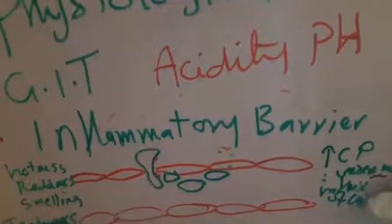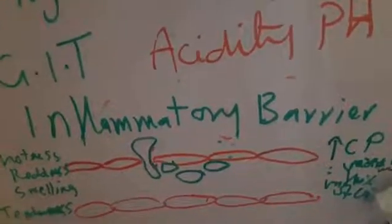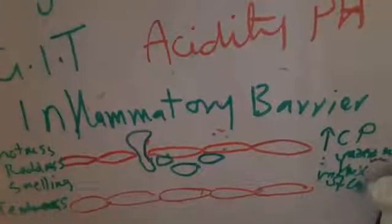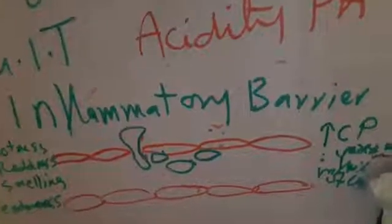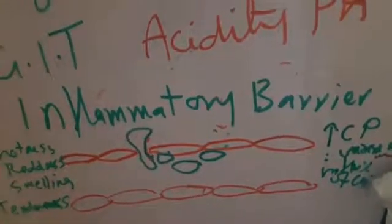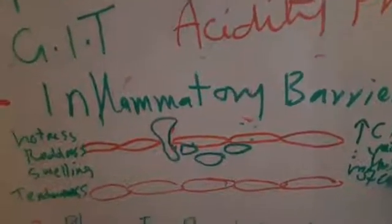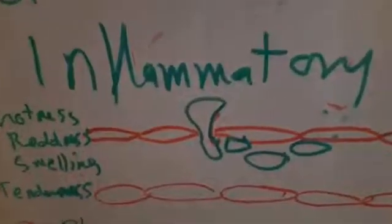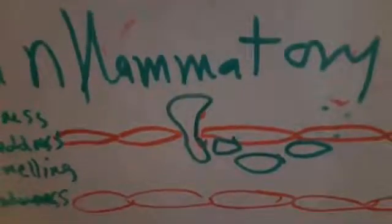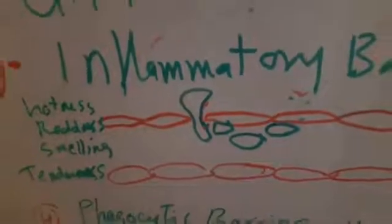Inflammation is an immune response, but it is an augmented and injurious immune response. Three major events are responsible: increased capillary permeability, vasodilation, and influx of cells. For example, neutrophils come out to the area of bacteria and fight with them, and this results in the formation of pus.